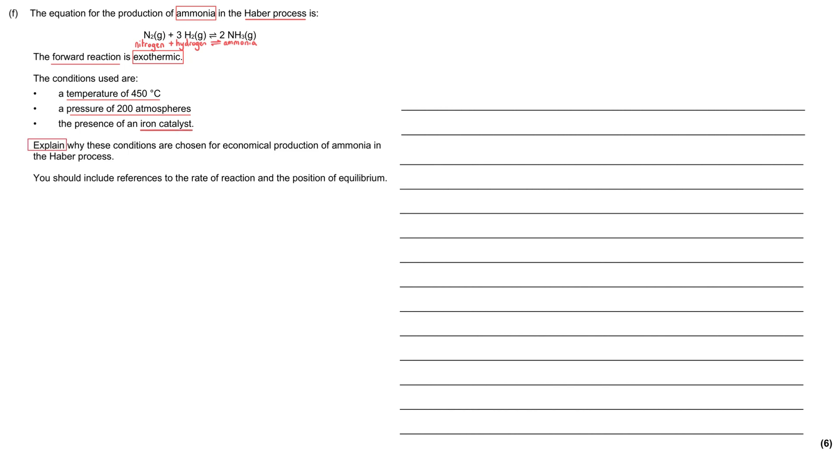We've been asked to explain why these conditions are chosen for economical production of ammonia in the Haber process. You should include references to the rate of reaction and the position of equilibrium.